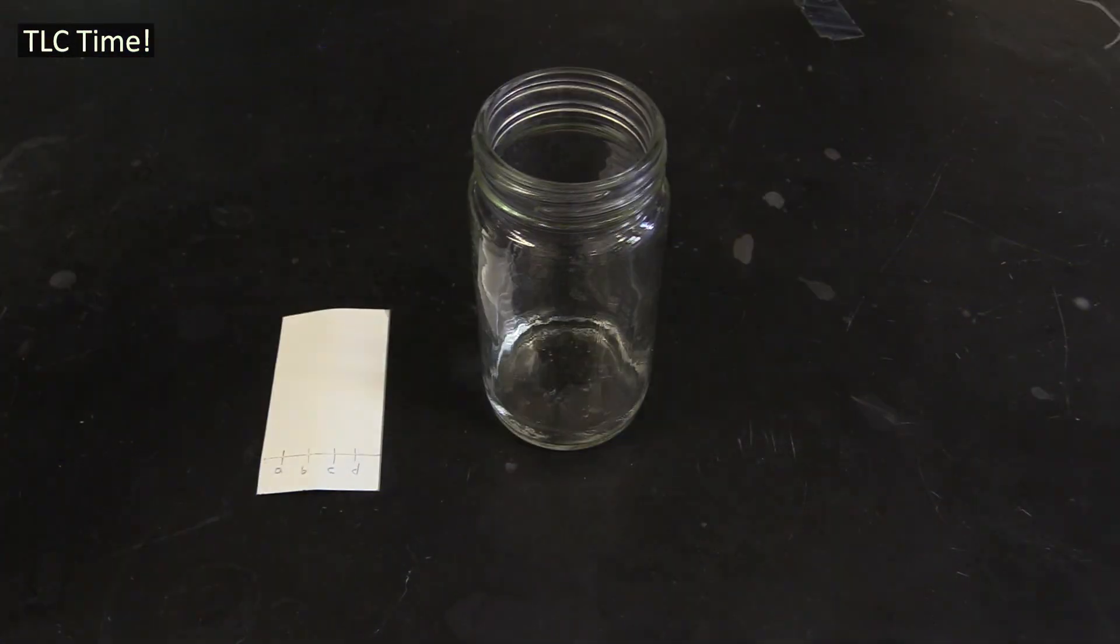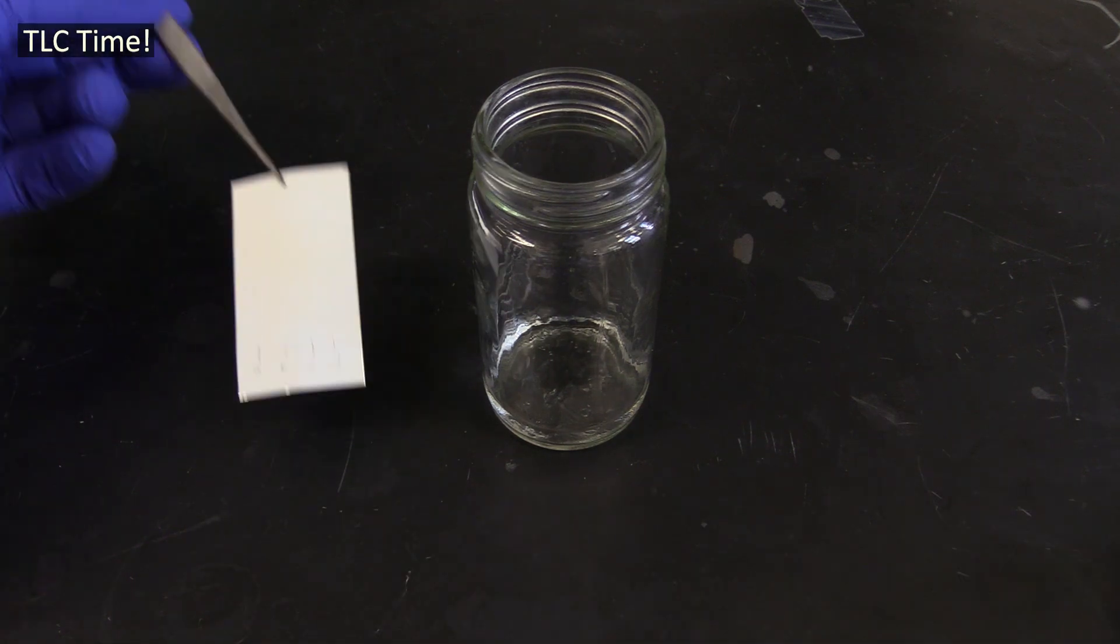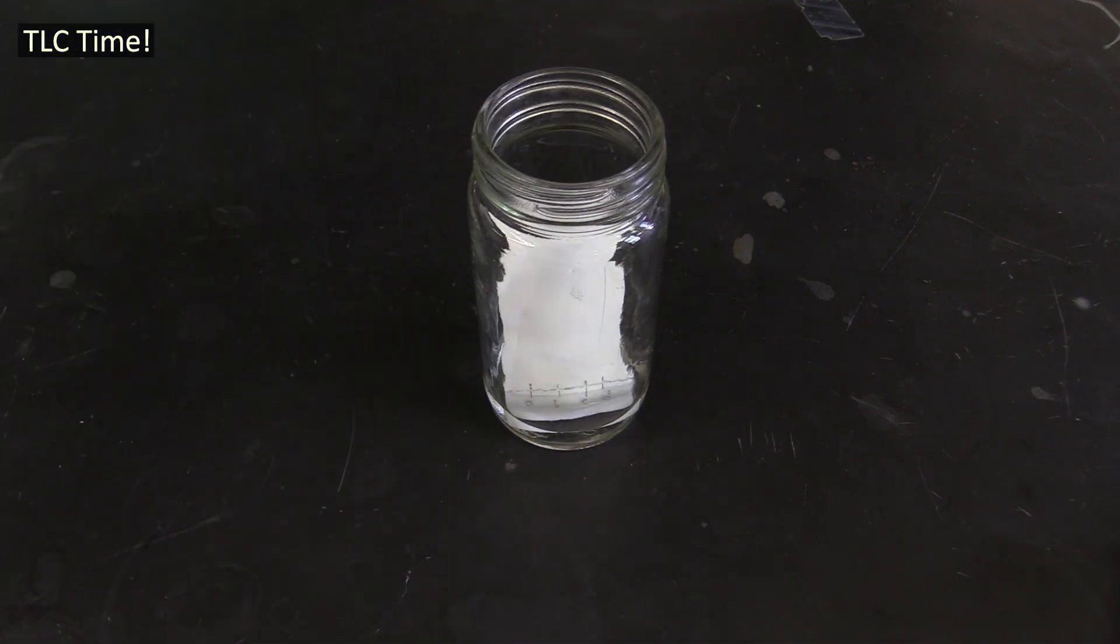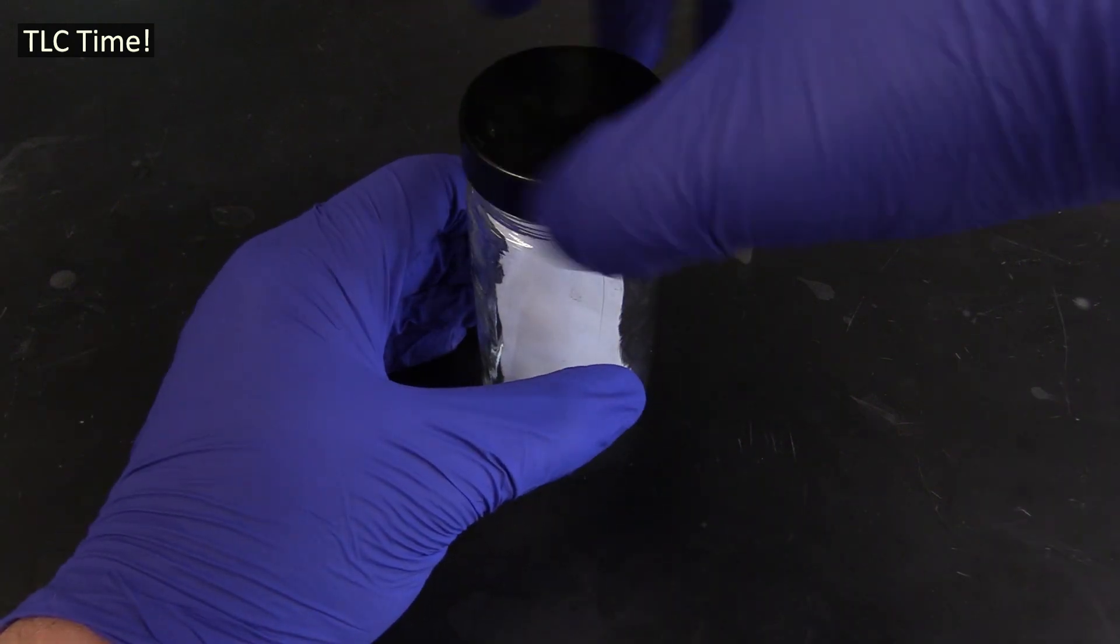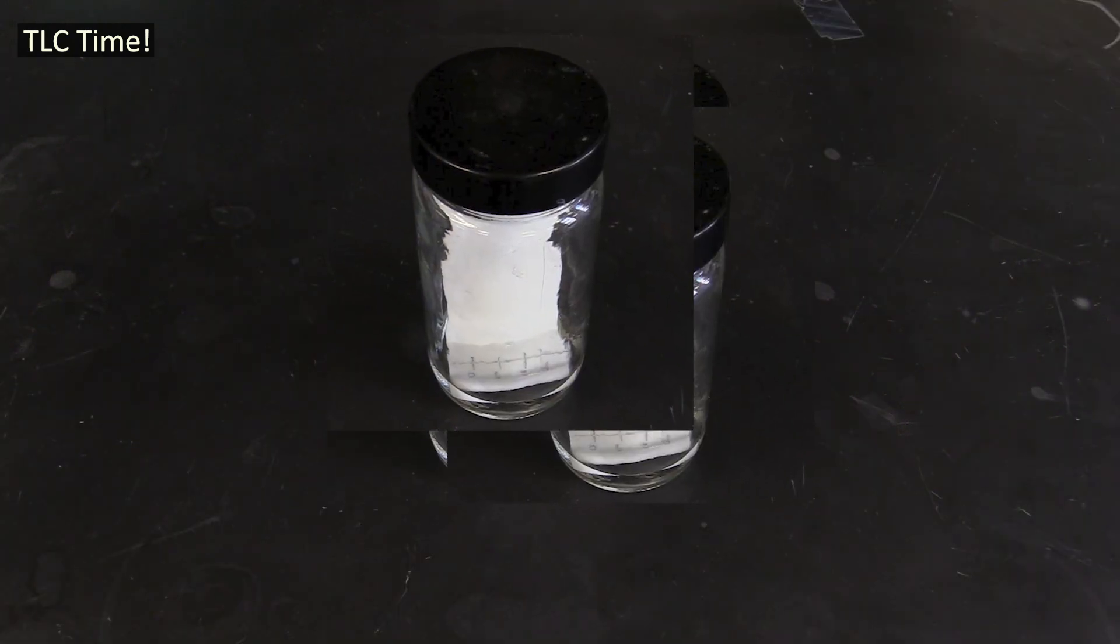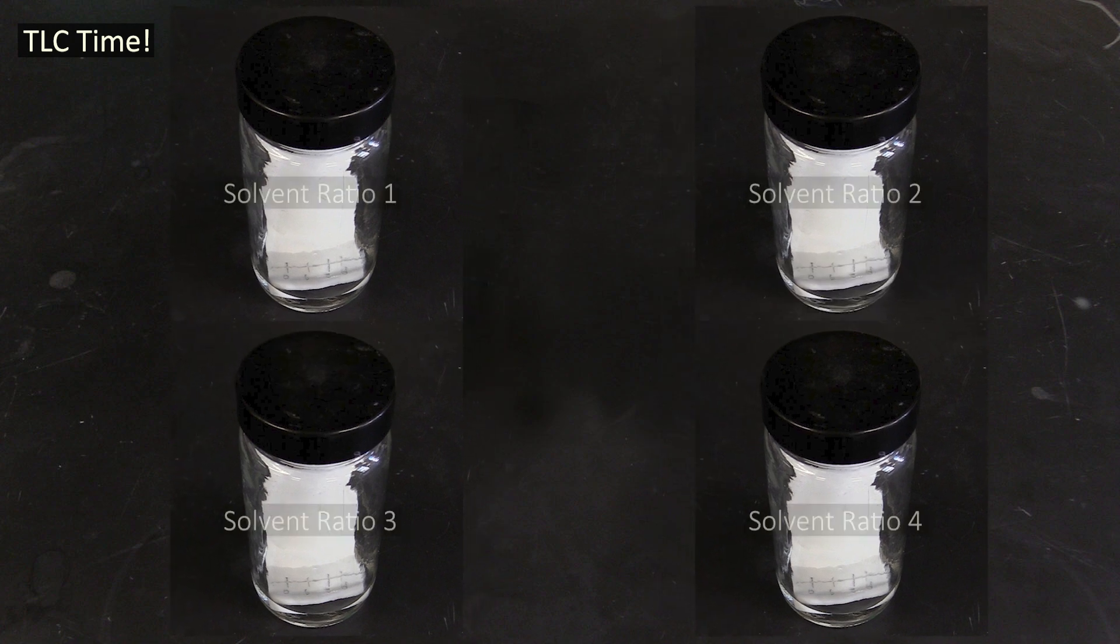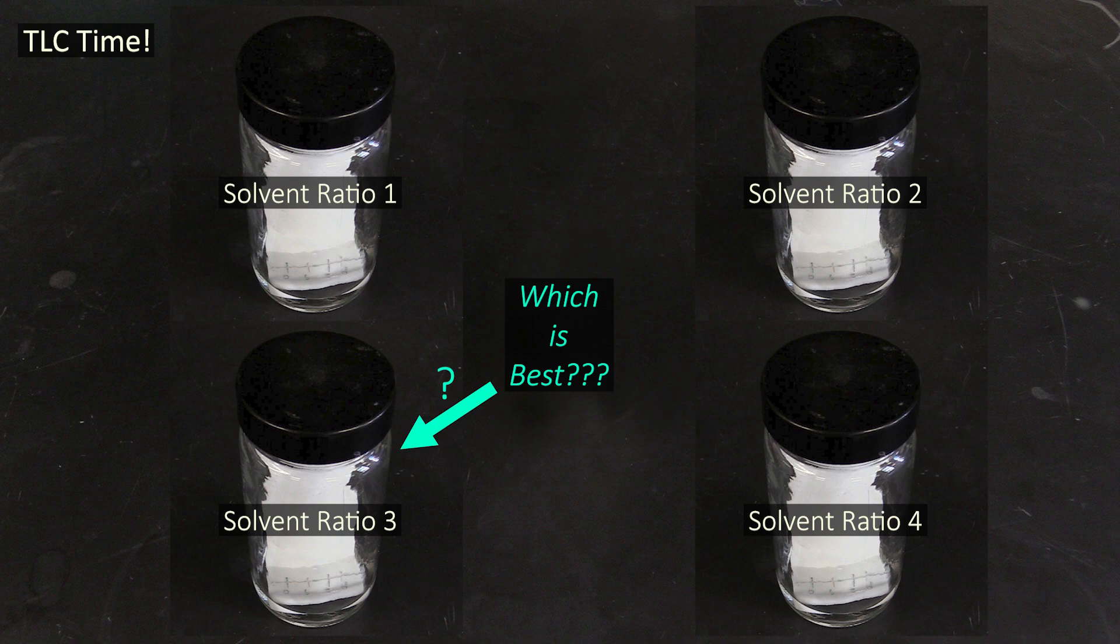The solvent you'll use to develop your TLC plate will be a mixture of hexanes and ethyl acetate, but we're not going to tell you what the most optimal ratio of these two solvents is to use for this. Instead, you will prepare four different solvent mixtures, use them to develop four different TLC plates, and determine for yourself which ratio is best.